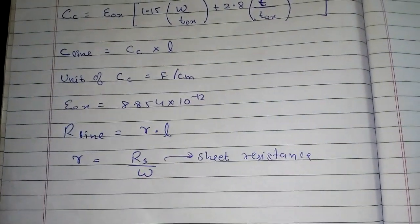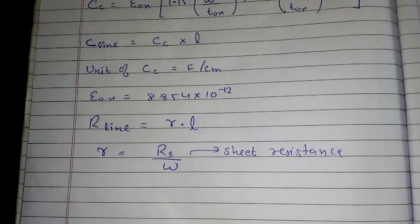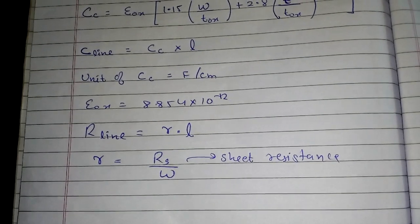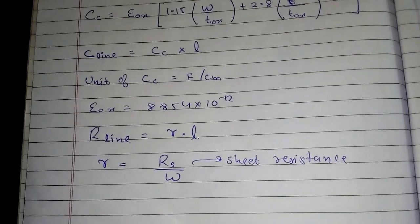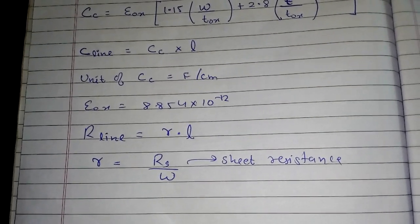Now what is this Rs? Rs is nothing but sheet resistance. This will be given in the question if you are ever asked to find R_line. R_line will be small r multiplied by l, and small r is nothing but sheet resistance capital Rs upon w.